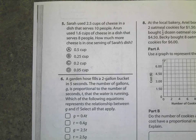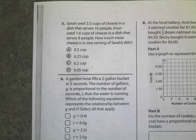Okay, it says, Sarah used 2.5 cups of cheese in a dish that serves 10 people. Aram used 1.6 cups of cheese in a dish that serves 8 people. How much more cheese in one serving of Sarah's dish? Now, servings talk about how much I'm using per person.